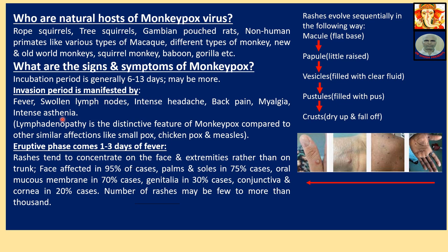The eruptive phase comes 1 to 3 days after fever. Rashes tend to concentrate on the face or extremities rather than on the trunk. Face is affected in 95% of cases, palms and soles in 75%, oral mucous membrane in 70%, genitalia in 30%, and conjunctiva and cornea in 20% of cases. Number of rashes may range from few to more than thousands.